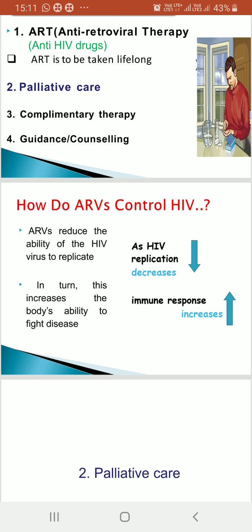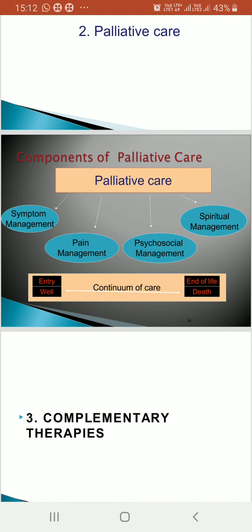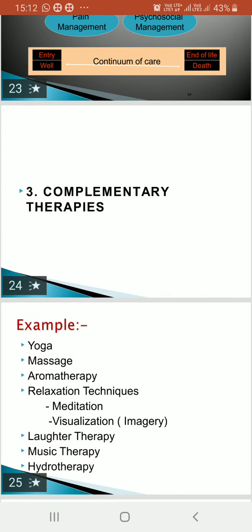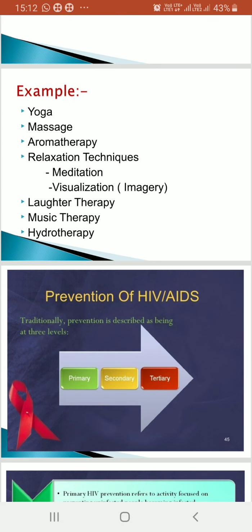How do ARVs control HIV? Antiretroviral drugs reduce the virus's ability to replicate, so the body's immune system response increases and the body's ability to fight disease improves. Palliative care components include symptom management, pain management, psychosocial management, and spiritual management — given to terminally ill patients and their families. Complementary therapies include yoga, massage, aromatherapy, relaxation techniques, meditation, visualization, laughter therapy, music therapy, and hydrotherapy.